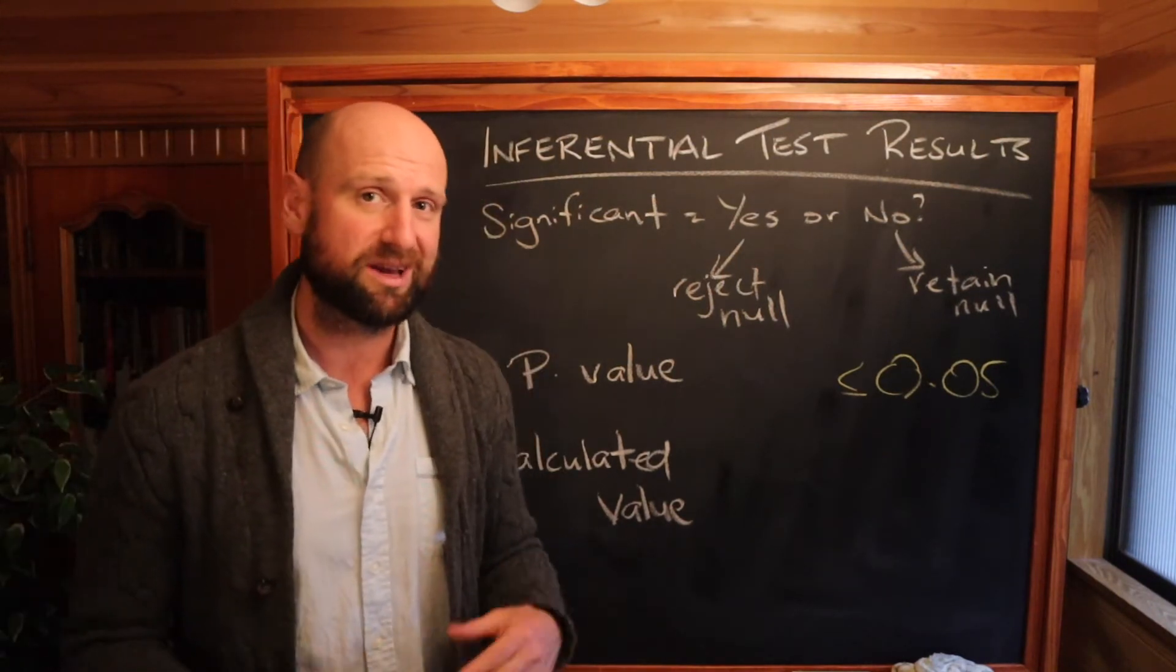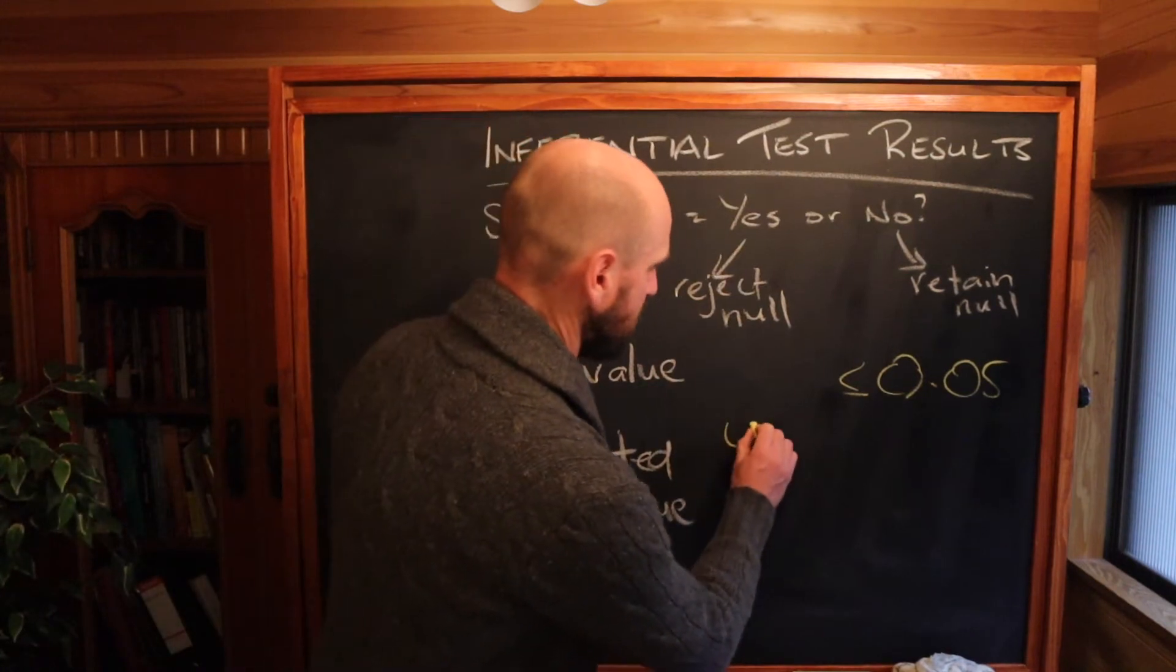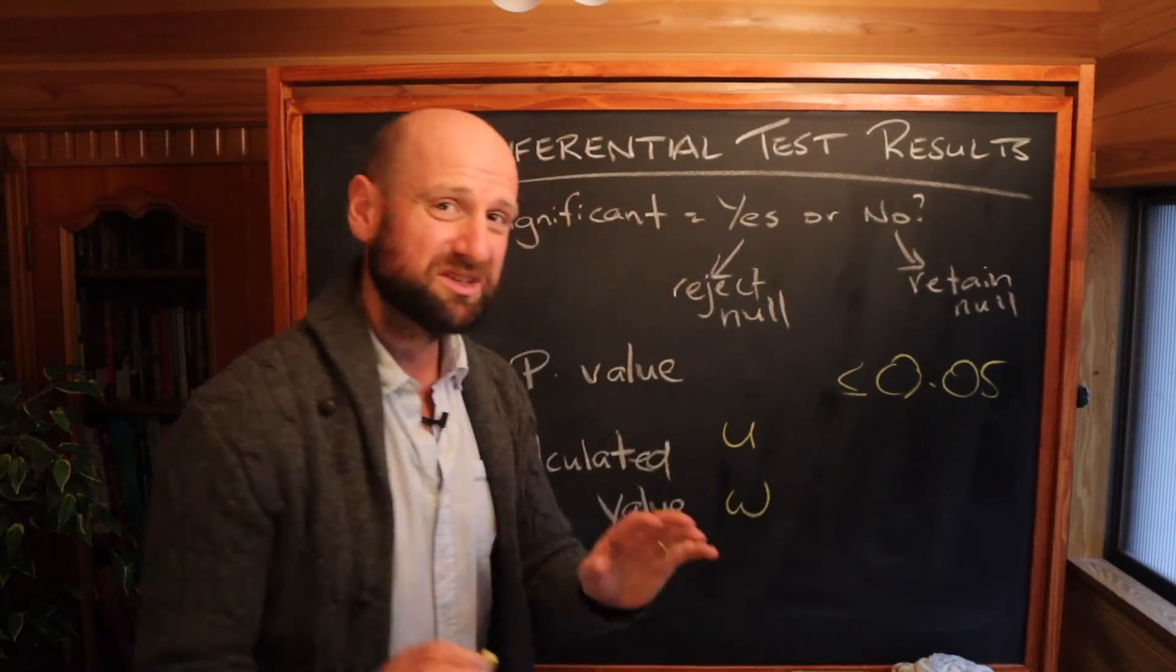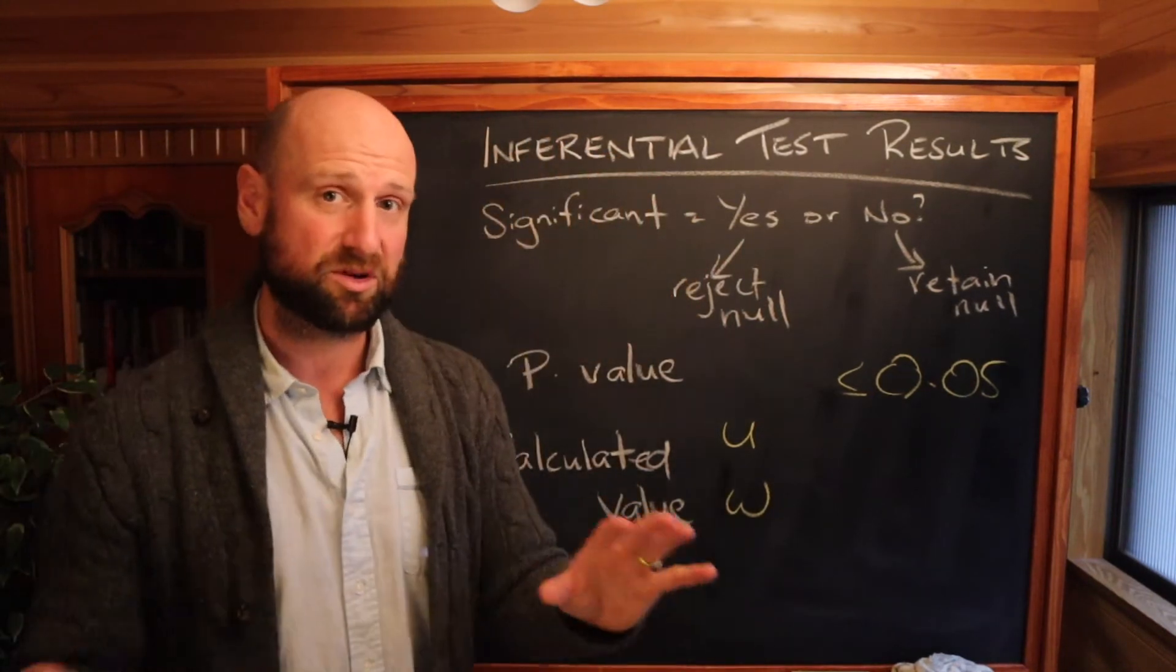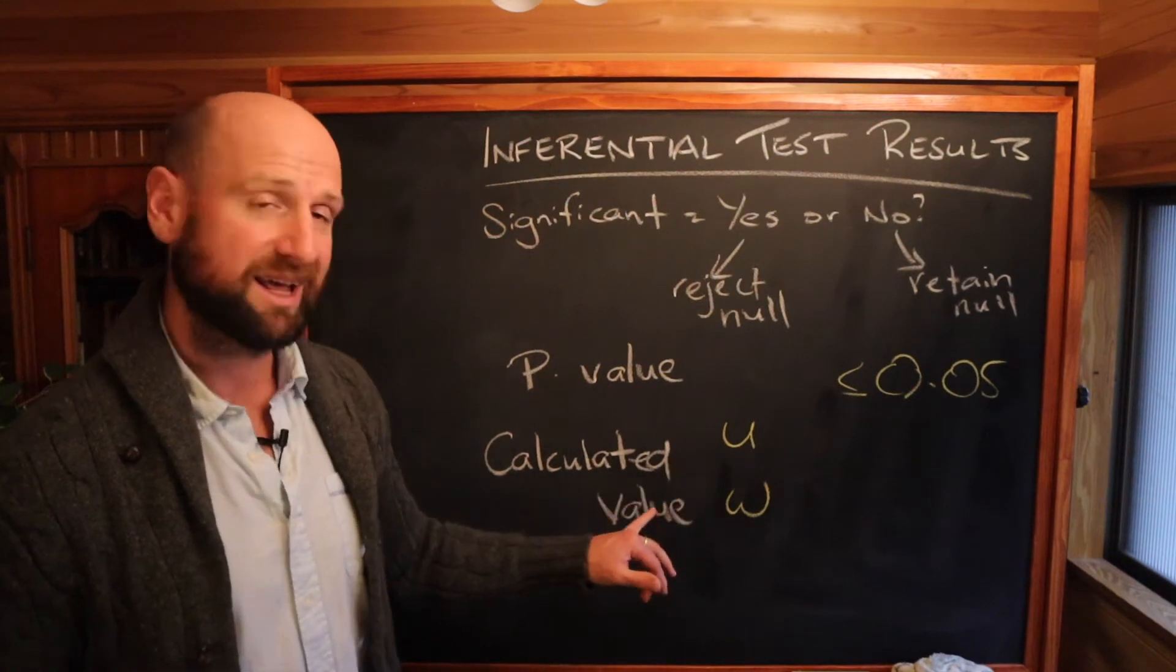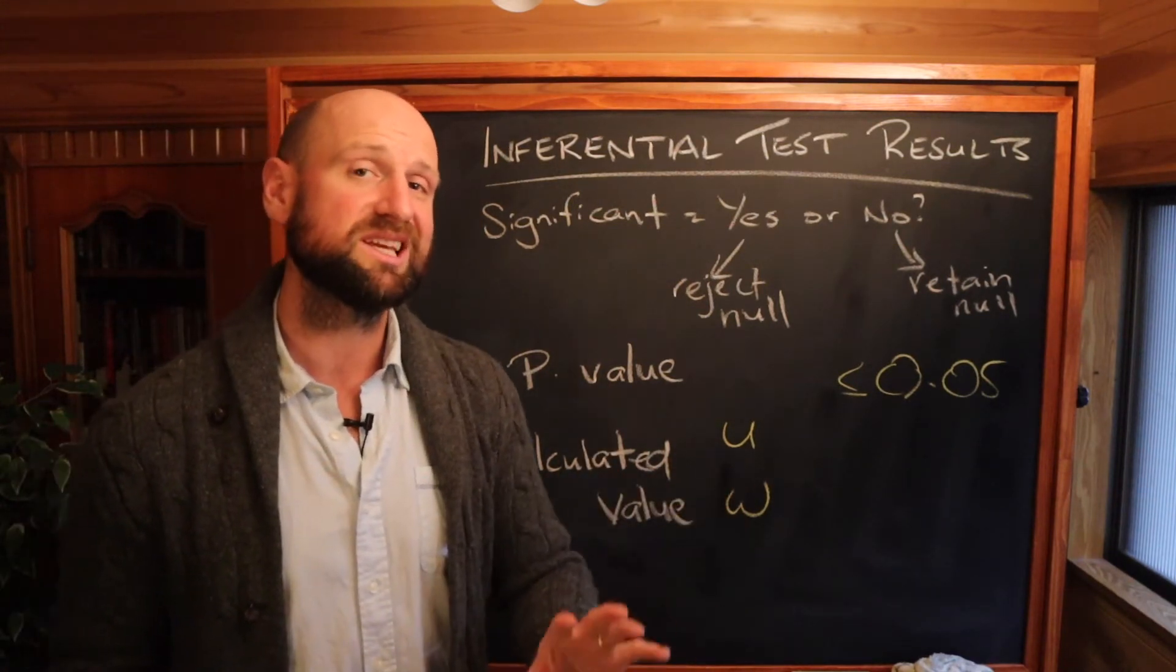The second way is to look at your calculated value. Now if you're doing the Mann-Whitney u-test this is going to be your u-value. If you're doing the Wilcoxon test this will be your w-value. I'll just focus on these two for now because they're the most common. If you're doing chi-squared it's going to be a little bit different. Now what you have to look at is your calculated value, either u or w, in relation to the critical value.